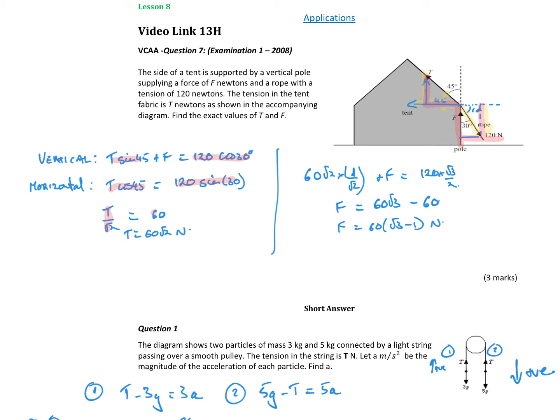I can see straight away from the horizontal components, cos of 45 is 1 over root 2, so T over root 2 equals sine of 30 which is a half times 60, so the tension force is 60 root 2 newtons. Put that into the first equation, so we get 60 root 2 times 1 over root 2 which is sine 45 plus F equals 120 times cos of 30 which is root 3 over 2, so that becomes 60 root 3. The root 2 cancels so we get F equals 60 root 3 minus 60.